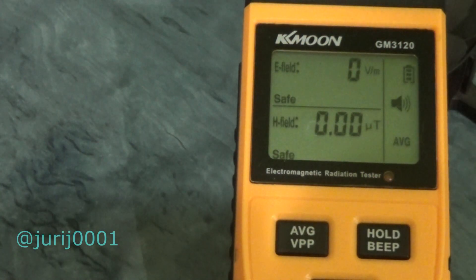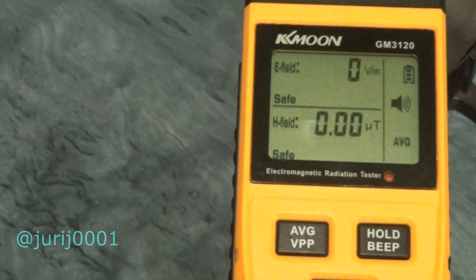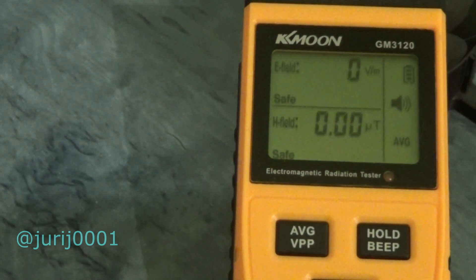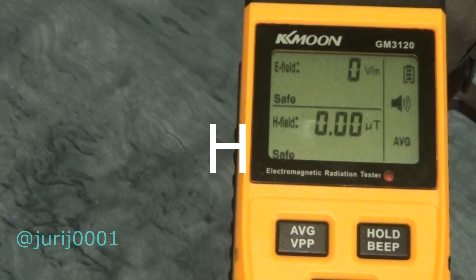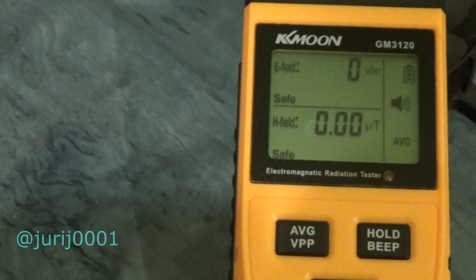Friends, I want to inform you that the electromagnetic field consists of two components: the electric component E and the magnetic field strength H, which is measured in micro-tesla. As you can see, the reading of the device is zero and zero.